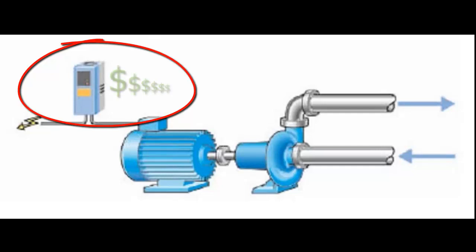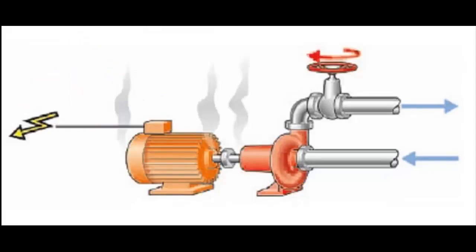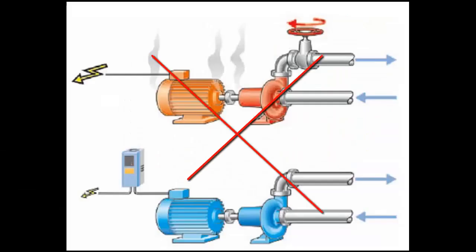Electrical engineers think reducing the speed of a pump will save energy. Mechanical engineers think restricting the flow will make a pump work harder. Neither of these things is true.